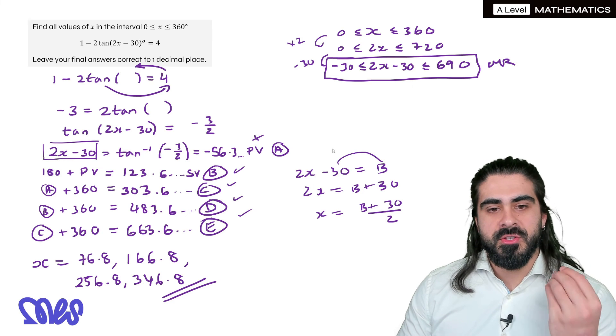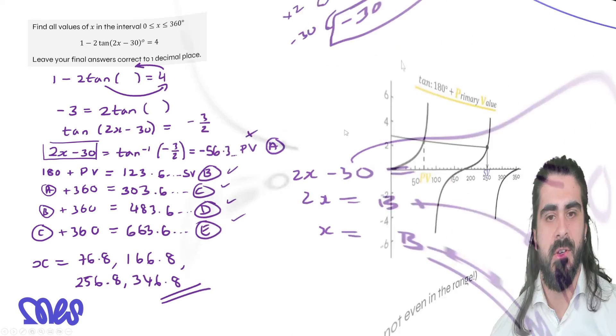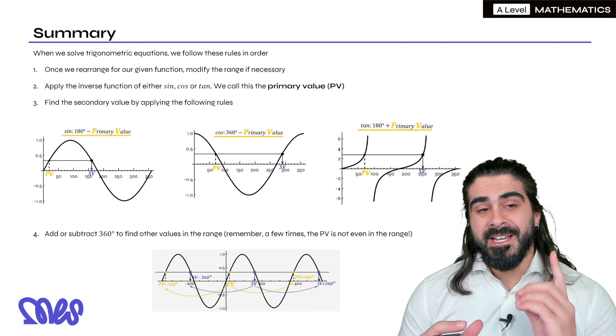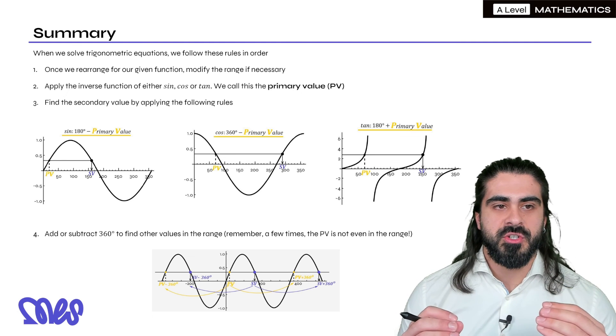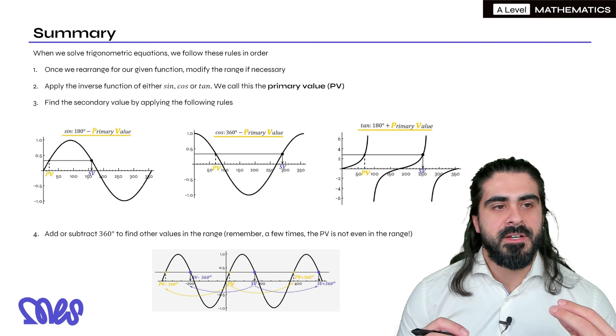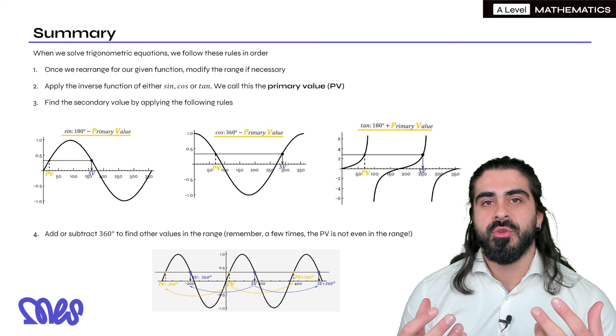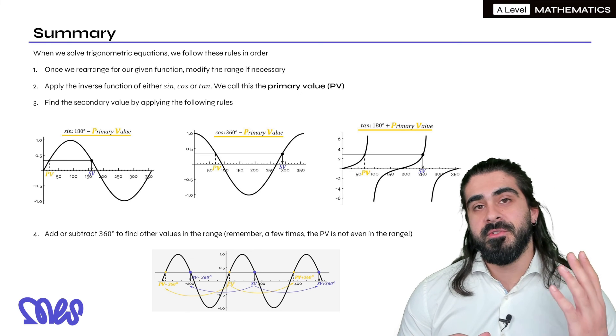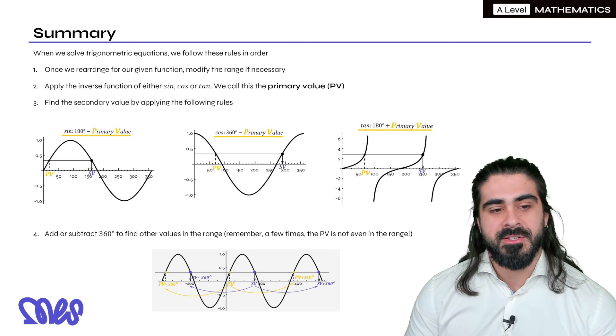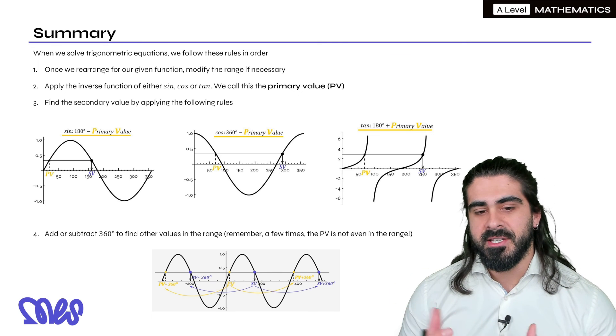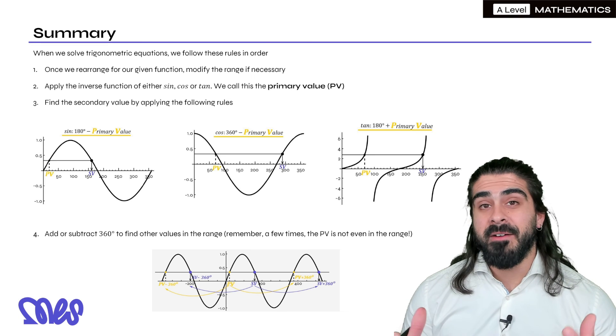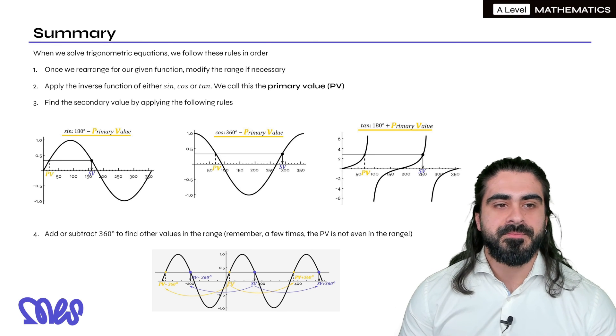That's how we deal with solving trig where the angle is not just x. So let's do our quick summary again. So we can add one more thing. So when we solve trig equations, we follow these rules in order. Once we rearrange for our given function, like we did in the previous example, we rearrange for tan. We modify the range if necessary. Then we apply the inverse of either sine, cosine, or tan. We call this the primary value. To find the secondary value, if you're dealing with sine, it's 180 minus. Or cosine, 360 minus, and tan, 180 plus. Then once we've done that, we just add or minus 360 to find other values in the given range. And that's really it. And if you have modified the range, then you just need to unmodify the range as well.